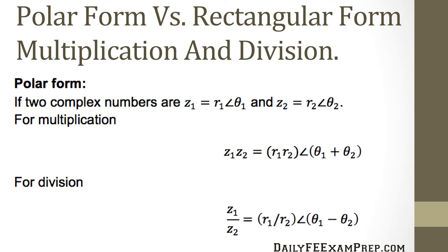In polar form, if two complex numbers are z1 equals r1 angle theta1 and z2 equals r2 angle theta2, then for multiplication we have r1 r2 angle theta1 plus theta2, and division is r1 over r2 angle theta1 minus theta2.